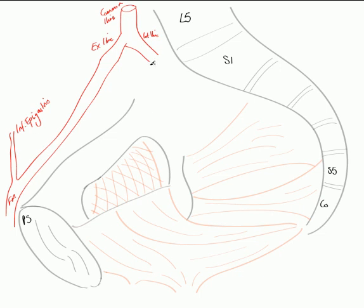If we concentrate on the internal iliac, it also splits into two main trunks — the anterior trunk and the posterior trunk of the internal iliac. We're going to detail the anterior trunk first.